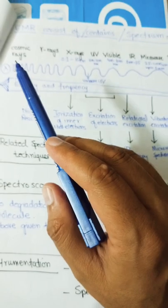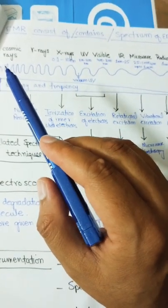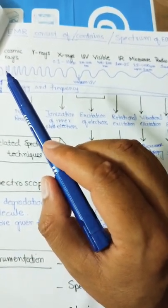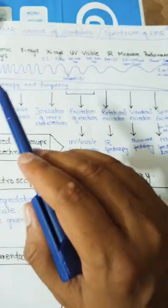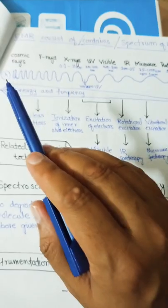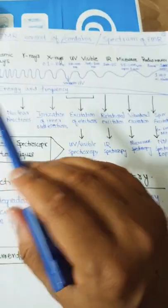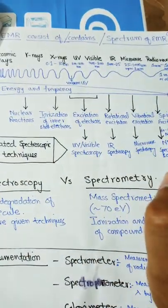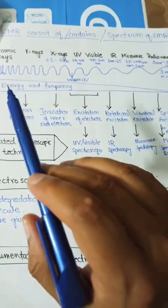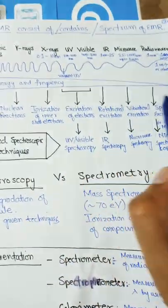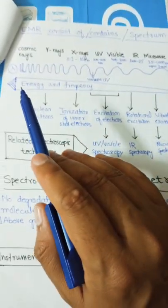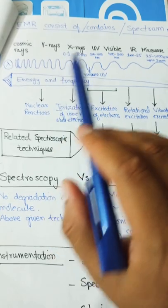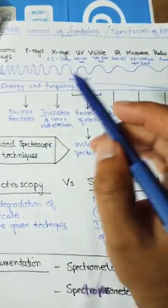As we go from cosmic rays to radio waves, their wavelength increases. Conversely, their energy and frequency decrease. So cosmic rays, gamma rays, and x-rays have the greatest energy and frequency, while radio waves have the longest wavelength and the least energy.